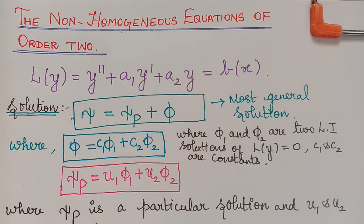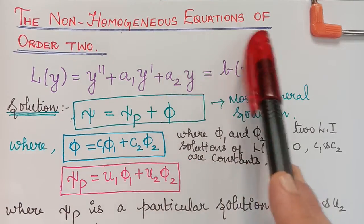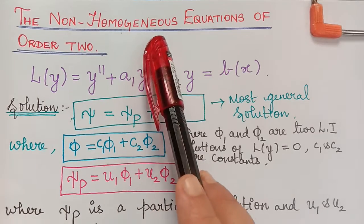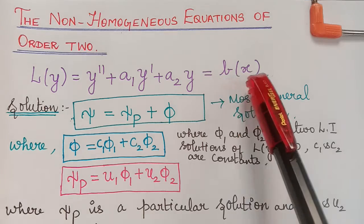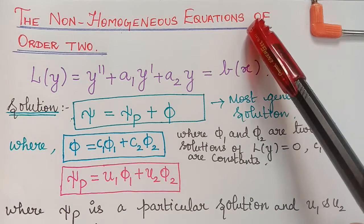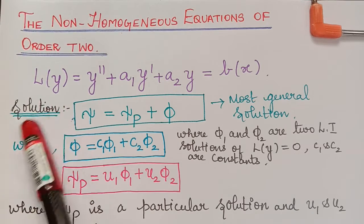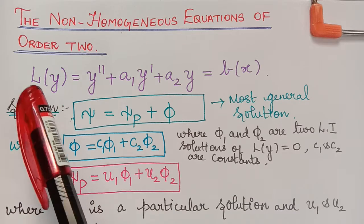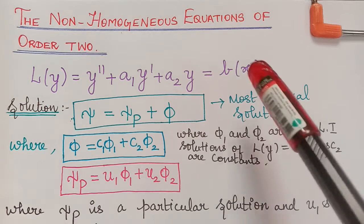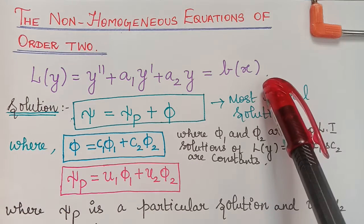Hello students. In this video lecture we will be solving problems on the topic of non-homogeneous equations of order 2. If the equation L of y is equal to B of x, then it is known as a non-homogeneous equation. Previously we learnt about homogeneous equations where L of y was equal to 0. So when the equation equals 0 it is homogeneous, and when it equals a function B of x it is non-homogeneous.